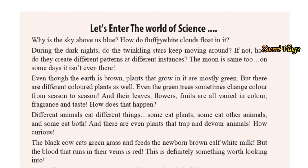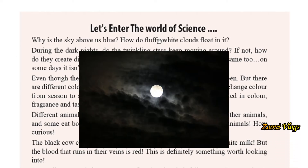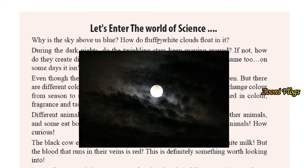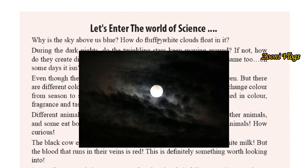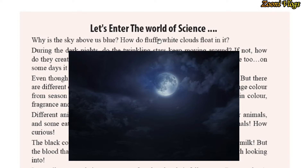The moon is the same too — on some days you can clearly see the moon, but on some other days it's not visible. What's the reason behind that? Also, even though the earth is brown, what is the color of the earth? That is brown, right? But the plants that grow in it are mostly green.